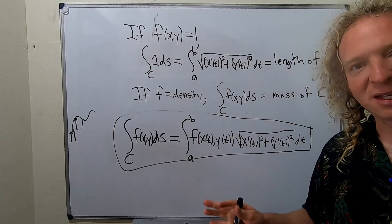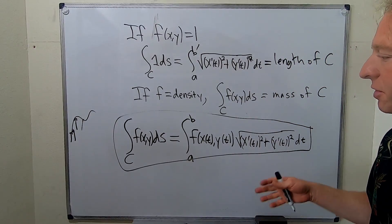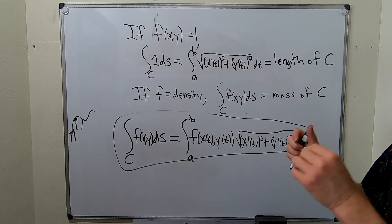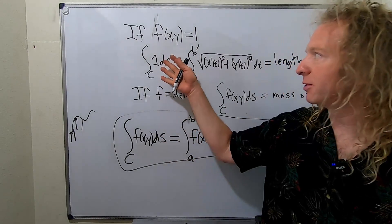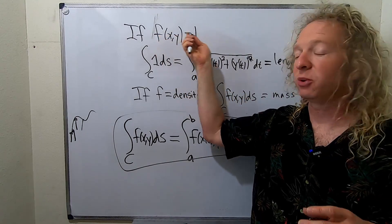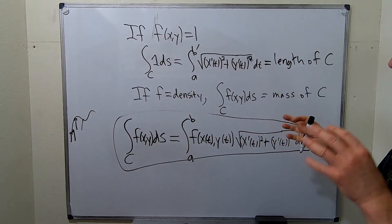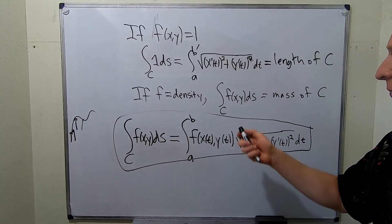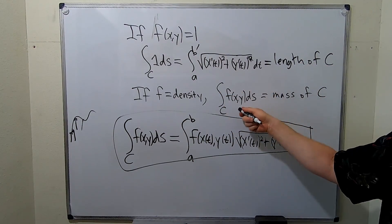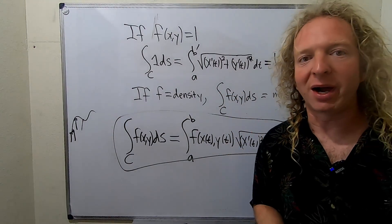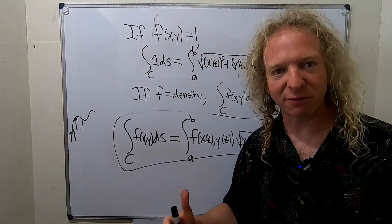So that's it. In the videos that follow, you'll see plenty of examples of how to compute line integrals. I just wanted to briefly define it and then talk about two specific cases. So if f is equal to one, you get the arc length. If f is actually a density, like a density of a wire, then the line integral over the wire will give you the mass of the wire. I hope this video has been helpful. Take care.